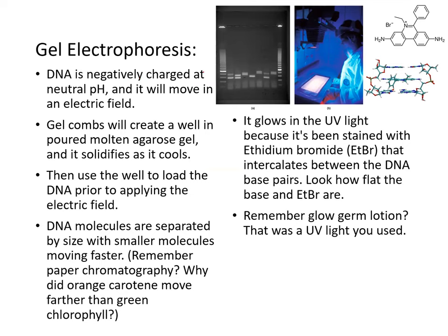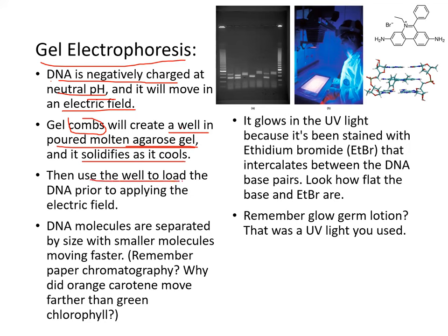To analyze the DNA, gel electrophoresis is used. DNA is negatively charged at neutral pH, so it'll move in an electric field. The gel comb creates wells in a molten agarose gel — think of it as a jello that's slightly harder. It solidifies as it cools, and then we use the well to load the DNA prior to applying the electric field. DNA molecules are separated by size, with smaller molecules moving faster. Remember the paper chromatography on photosynthetic pigments — orange carotene moved farther than green chlorophyll. Why is that? You should consider that.